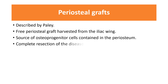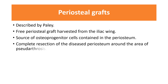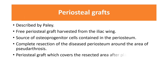Periosteal graft was described by Peltier. Periosteal grafts are harvested from the iliac wing because they are a rich source of osteoprogenitor cells present in the periosteum. Complete resection of the diseased periosteum around the area of pseudarthrosis is performed, and periosteal grafts then cover the resected area after placement of the bone graft.